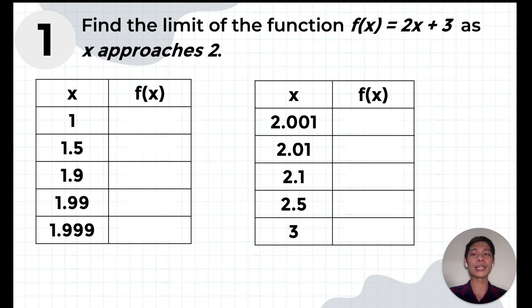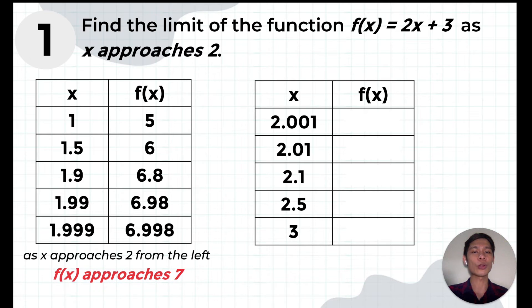For the table on the left, let's evaluate the function at the given numbers and observe the values of f(x) from top to bottom. That is, if X is 1, f(1) is equal to 5. If X is 1.5 then f(1.5) is equal to 6, and so on until we get X is equal to 1.999 then f(x) would be equivalent to 6.998. It shows that f(x) approaches 7. Meaning, as X gets closer and closer to 2 from the left, f(x) gets closer and closer to 7.